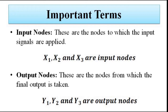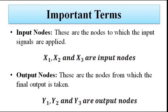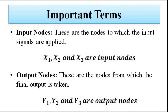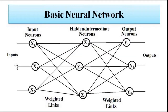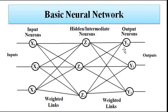First are the terms associated with this neural network or this artificial neuron. First is the input nodes. In this neural network x1, x2 and x3 are the input nodes. These are the nodes to which the input signals are applied, and that's why they are called as input nodes or input neurons. Similarly, the output nodes are the nodes from which the output is taken. Here y1, y2 and y3 are the output nodes.